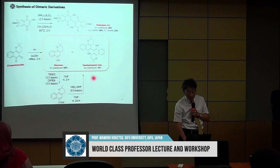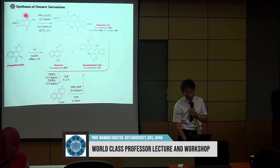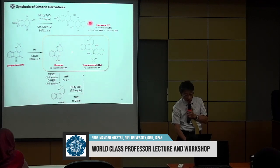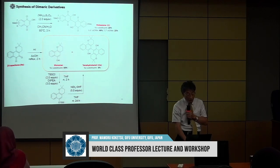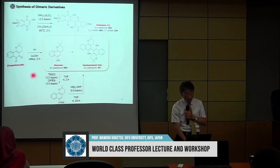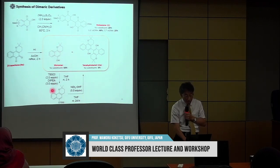Next, we tried to synthesize dimer compounds using this compound as starting material. Using these conditions, we can get the dimer compound in about 23–63% yield. Under acidic conditions we obtained this compound and also another compound, and using further conditions we can convert them.